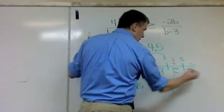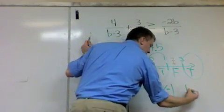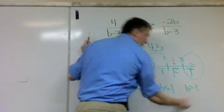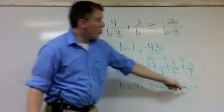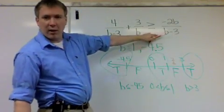And then the last section here would say b is greater than 3, and I can't make it equal to 3, because if it's equal to 3, I have undefined.